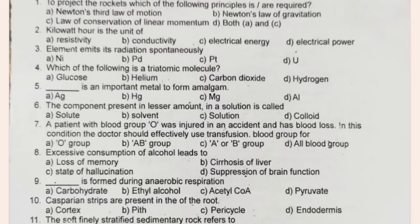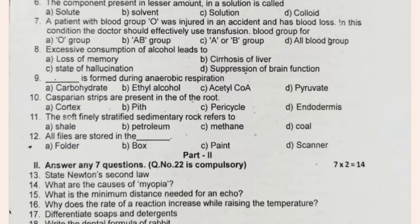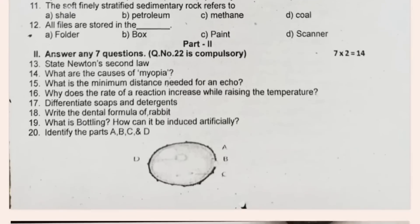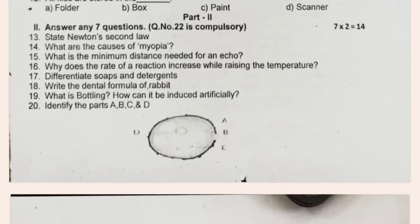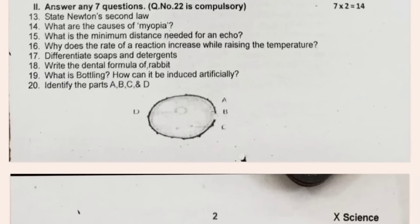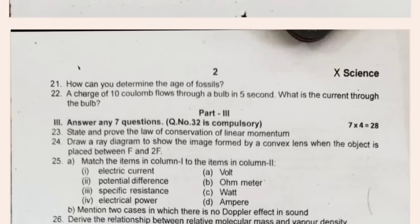Now click the link. Set the answer. Click on part 2. You can see the same parts. The important question is to see. What are the causes of myopia? What is the minimum distance needed for an echo? Why does the rate of reaction increase with rising temperature? What is the charge if 10 coulombs flow through a bulb in 5 seconds? What is the current through the bulb? Physics tumor.